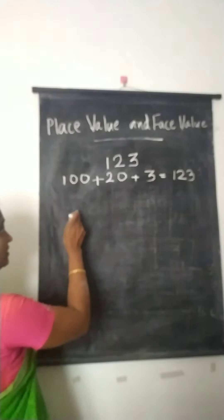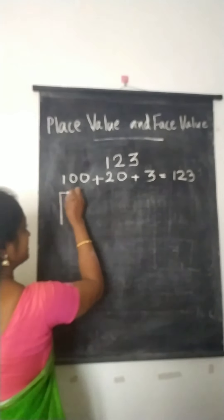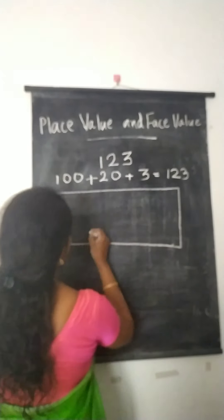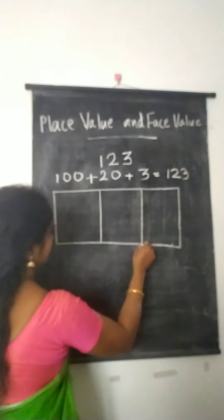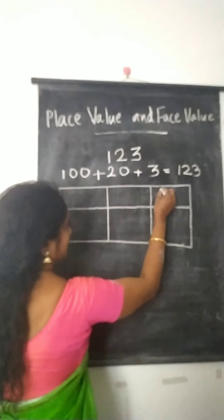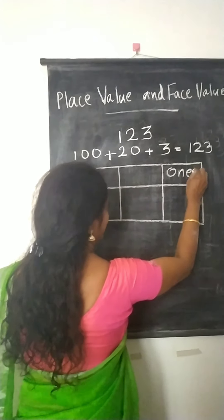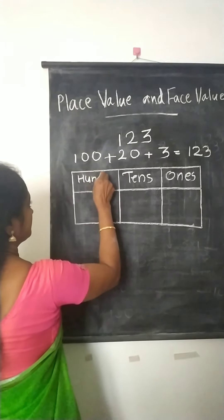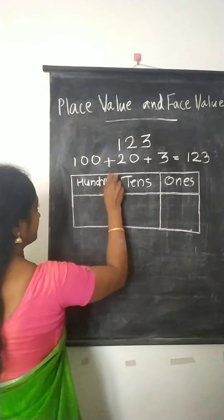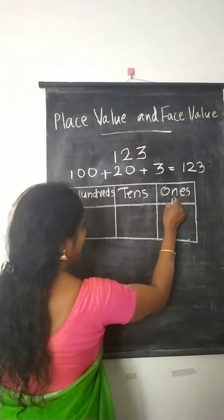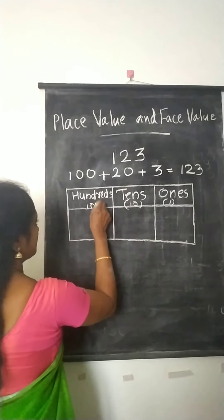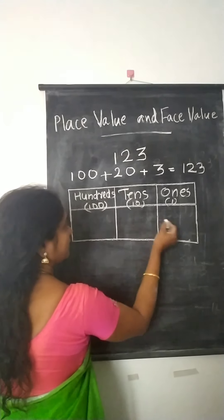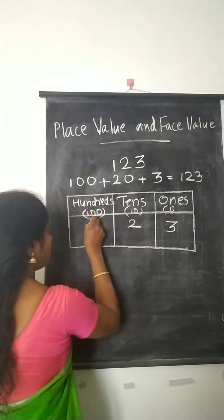Now I am going to enter these numbers in a place value chart. This is the 1's place, this is the 10's place, and this is the 100's place. Now we can write these digits in the box: that is 3, 2, 1.